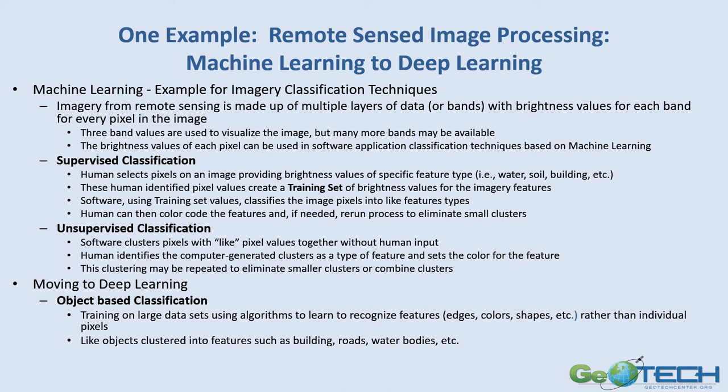Moving from machine learning to deep learning, instead of looking at individual pixels, the software uses large data sets and algorithms to recognize like features using edges, colors, shapes, and cultural features. Like objects are clustered into features such as roads, water bodies, and swimming pools. This approach requires much less human input, though corrections can still be made.